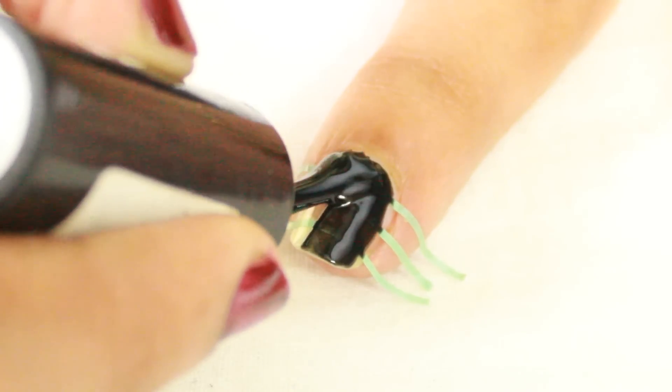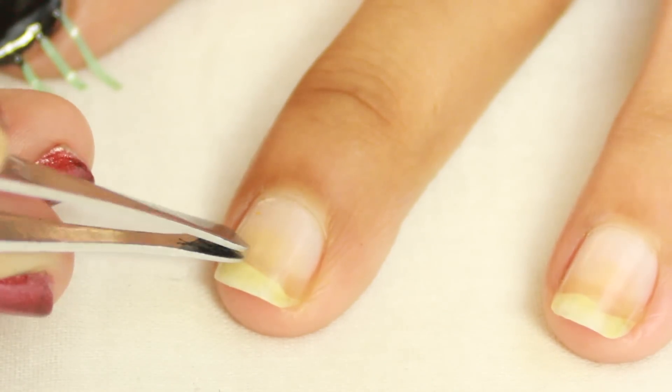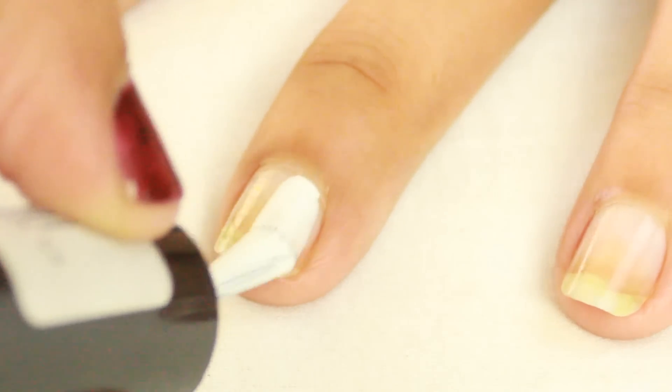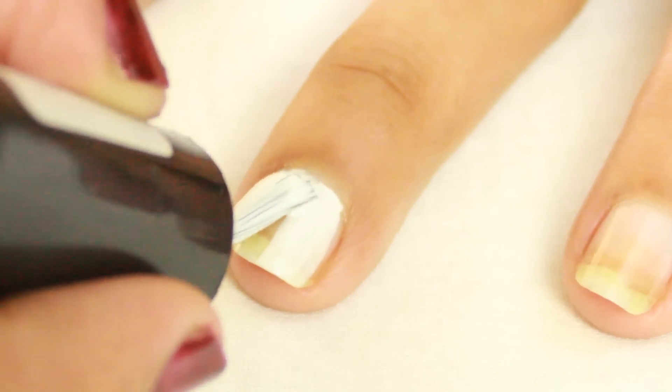So for the second design, place a square tape on the middle of the nail and apply a double coat of white nail paint.